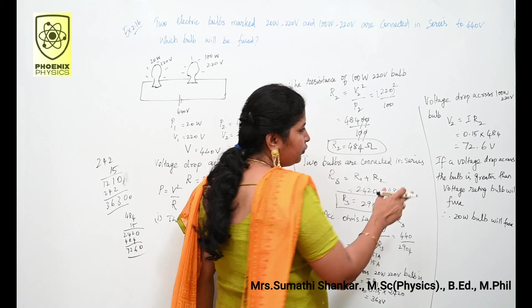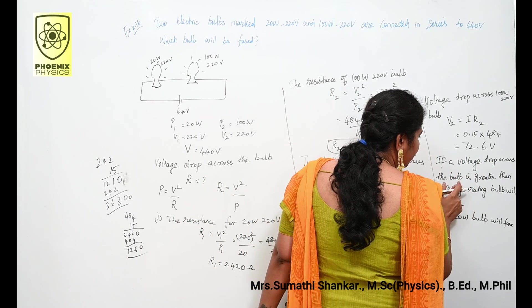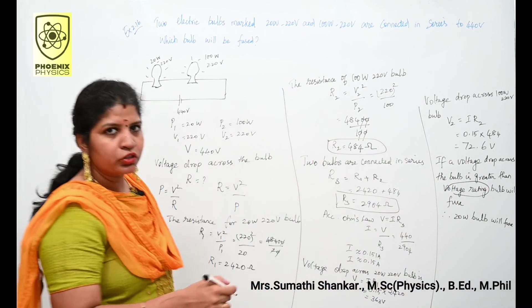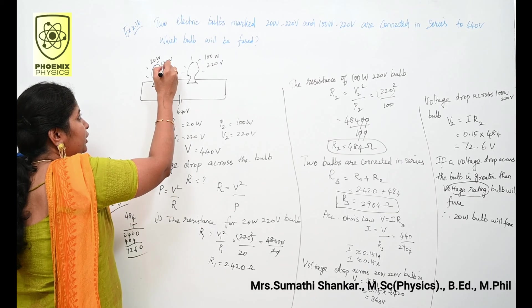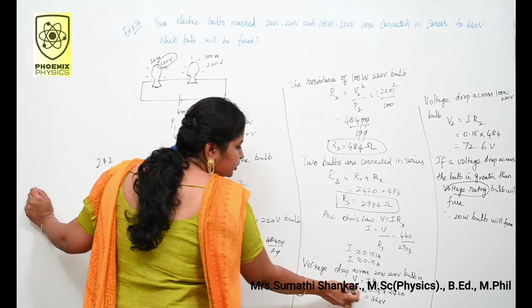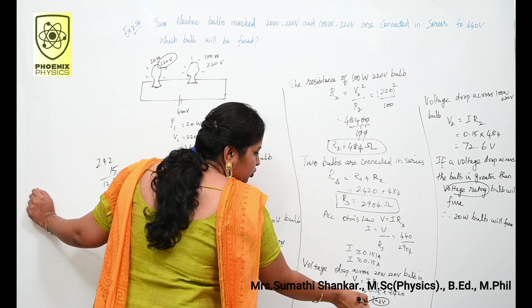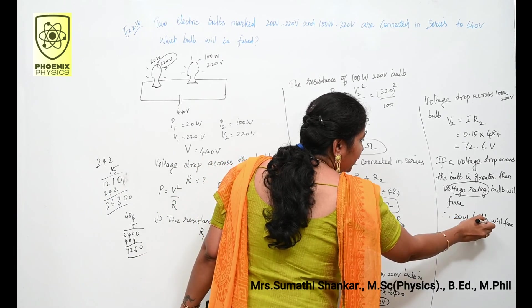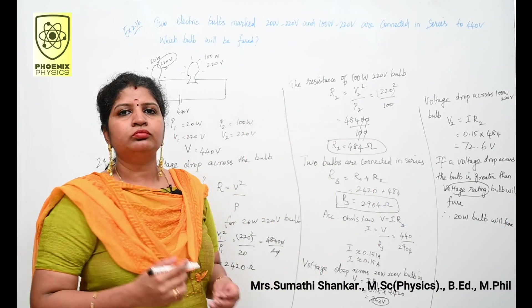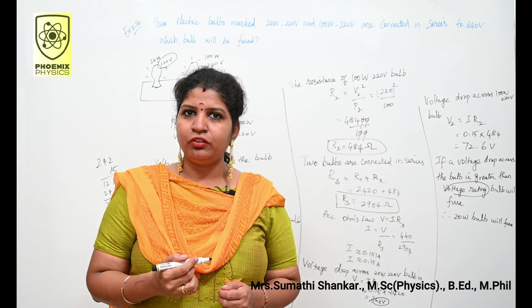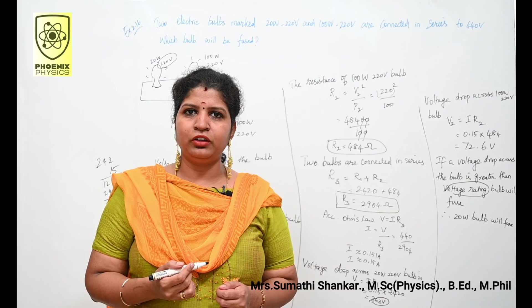You know that if voltage drop across the bulb is greater than voltage rating, bulb will fuse. Here bulb rating is 220 volt, but I have calculated V1 as 363 volt. So what is your conclusion? 20 watt bulb will fuse. I hope this video is useful to you. If you like my video, please share and subscribe. Thank you.